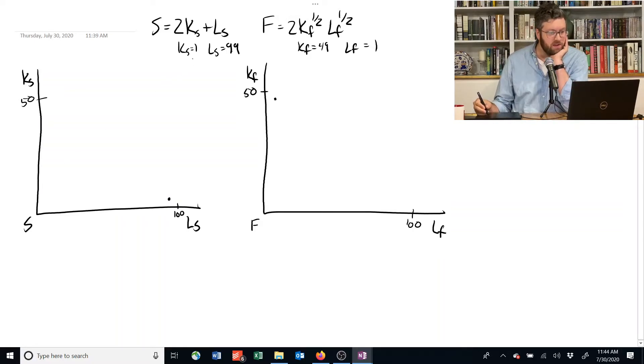Now in this case, capital is a perfect substitute for labor. The isoquants are going to be straight lines, and they're going to turn out to be kind of shallow straight lines. That's because for every one unit of capital, I need twice as much labor to produce the same output.